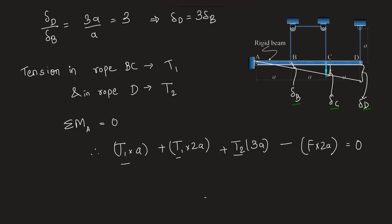This gives us 3A T1 plus 3A T2 will be equal to F into 2A. We need to establish a relationship between T1 and T2 in order to find out T1.